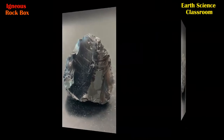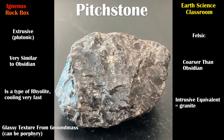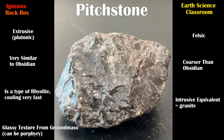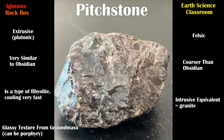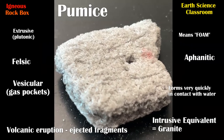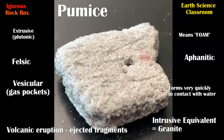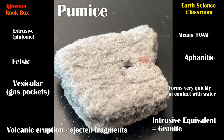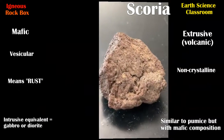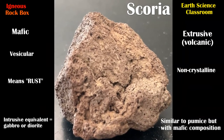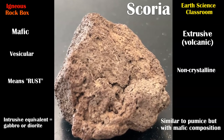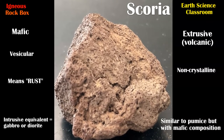The extrusive rock pitchstone is cooled lava — very quickly — and its intrusive equivalent is granite. It can also appear porphyritic. Next we have pumice, which is much like tuff: it is full of air pockets, ejected as fragments cooled from volcanic eruptions, so it's extrusive, and its name means foam. Next is scoria, another vesicular extrusive igneous rock — more mafic — its name means rust, and it is non-crystalline.